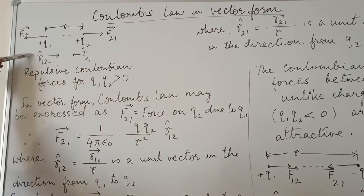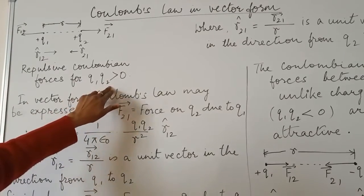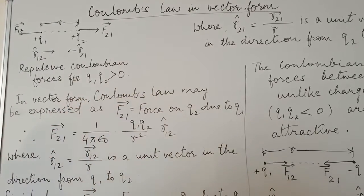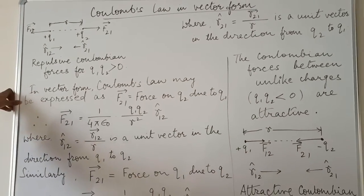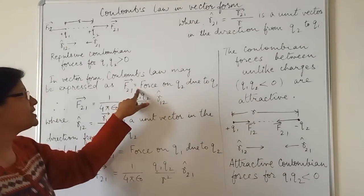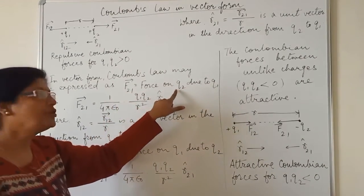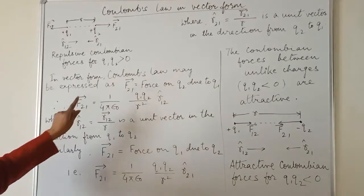And you see repulsive Coulombian force for Q1, Q2 more than zero. In vector form, Coulomb's law may be expressed as F21 is equal to force on Q2 due to Q1.